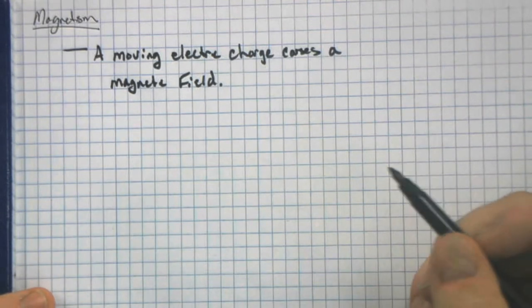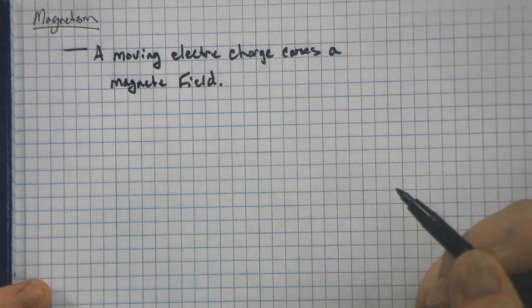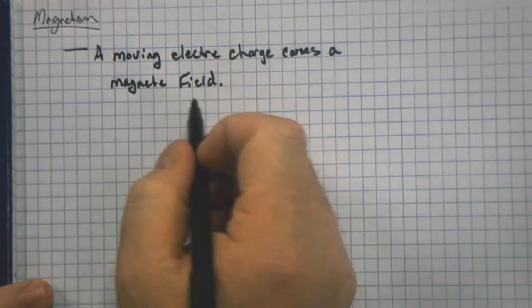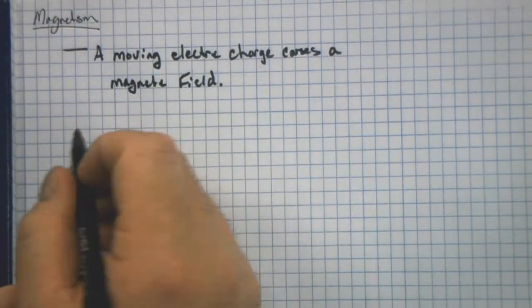A moving electric charge causes a magnetic field, and this has an equation to it, and we're going to introduce that with our magnetic field.